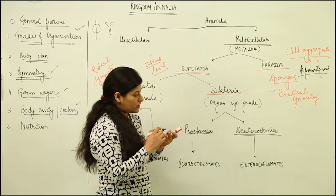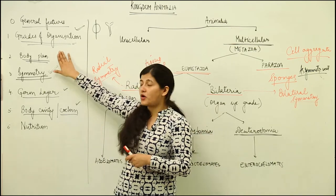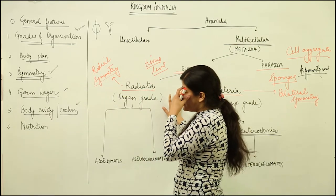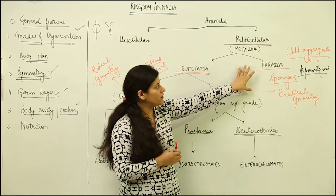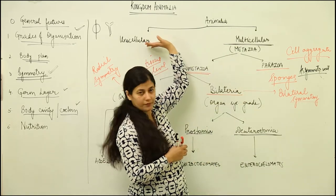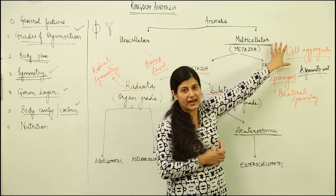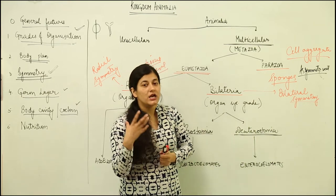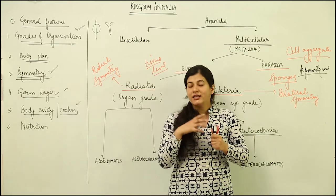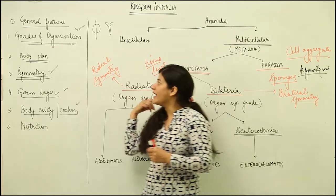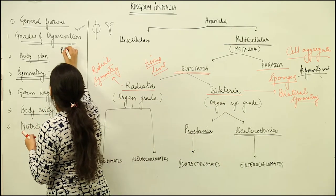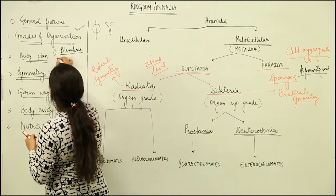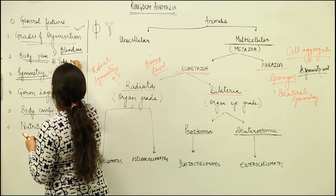When we get introduced to these two terms, we have to come across different body plans. When we have to understand body plan, first thing is we had a cellular organization, then we had cell aggregate organization — that was in the case of sponges. In the case of body plan, we have cellular organization, then we have the blind sac body plan, and the other is tube within tube.